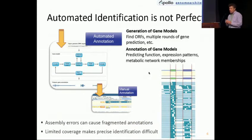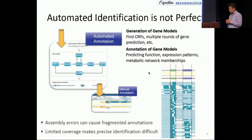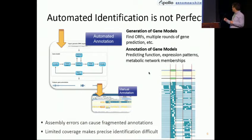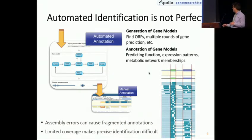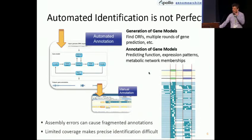Automated identification is not perfect. We have a ton of different tools for identifying and annotating genes from raw data. Typically these go through a round of finding ORFs, doing multiple rounds of gene prediction, predicting functions, expression patterns, and so on. The problem is if there's errors in the assembly or you have limited coverage, precise identification can be difficult and your scaffolds may not be assembled properly. You can see an example on the left — a green exon perfectly lined up, any computer could identify it easily. On the right, the BAM reads aren't quite lining up correctly, so you might need additional evidence or a human eye, or something about that biology.